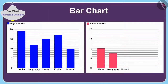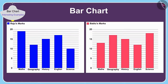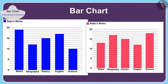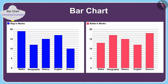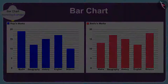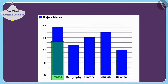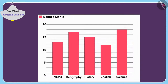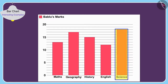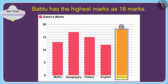Raju and Bablu made bar charts of the marks they scored. Children, by looking at the bar charts of Raju and Bablu, can you tell which subjects they got the highest marks in? The highest rectangle in Raju's bar chart is in mathematics, so Raju scored the highest marks — 19 marks. The highest rectangle in Bablu's bar chart is in science, so Bablu has the highest marks — 18 marks.